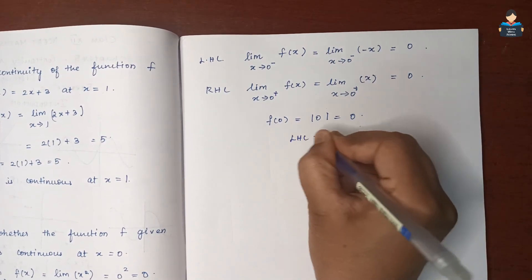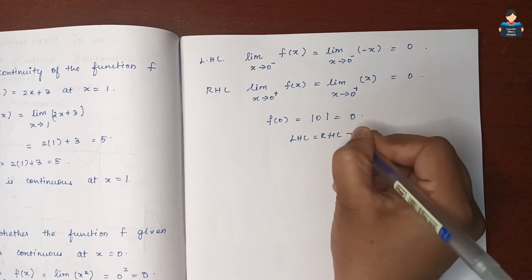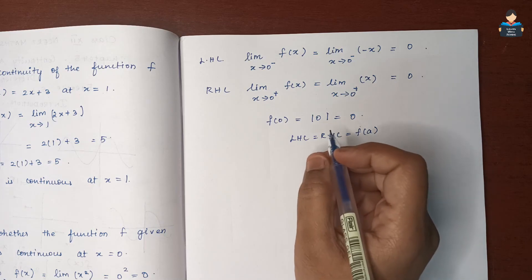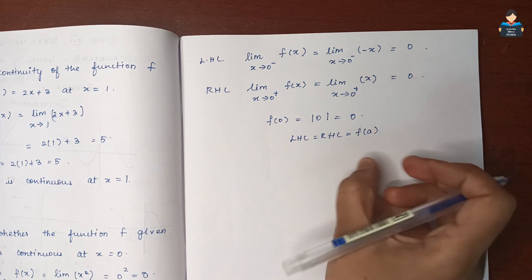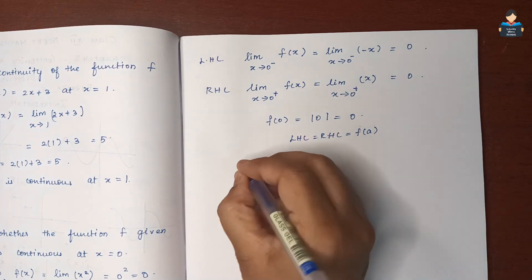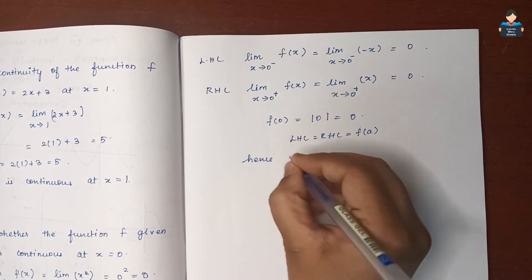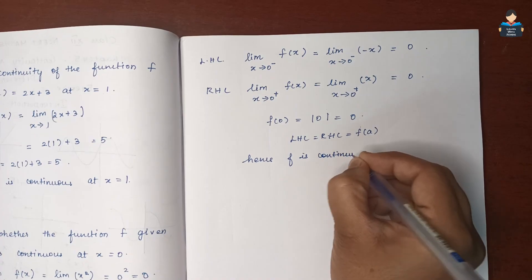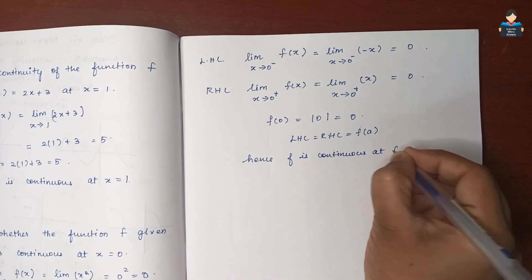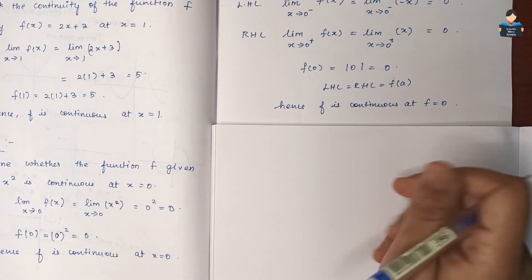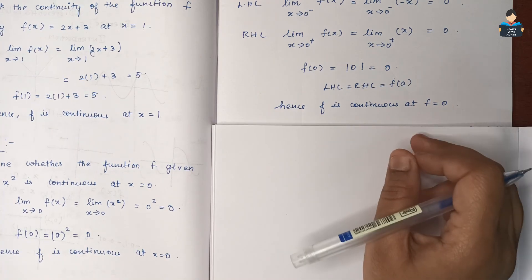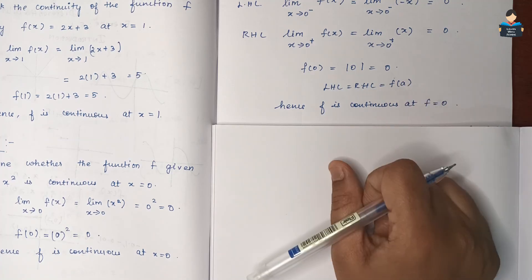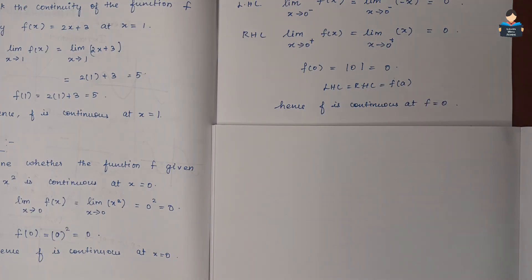Since LHL equals RHL and equals f(0) = 0, the function is continuous at x = 0. Hence, f is continuous at x = 0. That completes Example 3. For more example problems, please like, share, subscribe, and thank you.